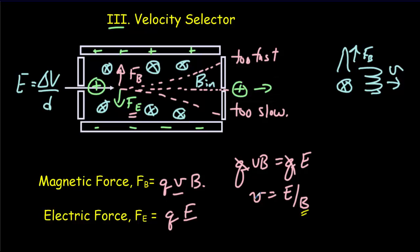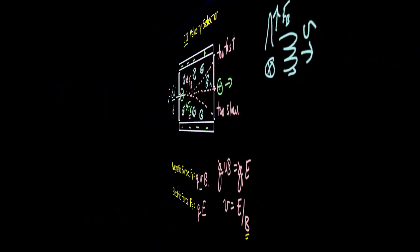So now let's take a look at what's going to happen to those positive ions as they enter the fourth region of the mass spectrometer. So here's our positive ion entering into that fourth region where we want to separate the different isotopes. And what we want these positive ions to do is to execute circular motion. So if we have a large mass particle, it's going to execute a circle with a large radius.